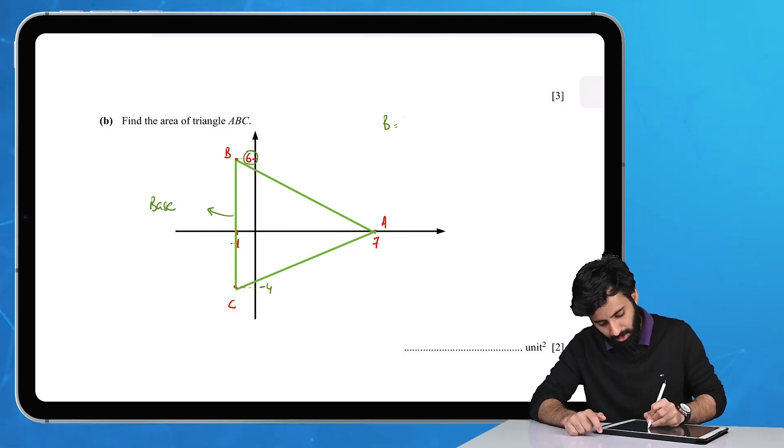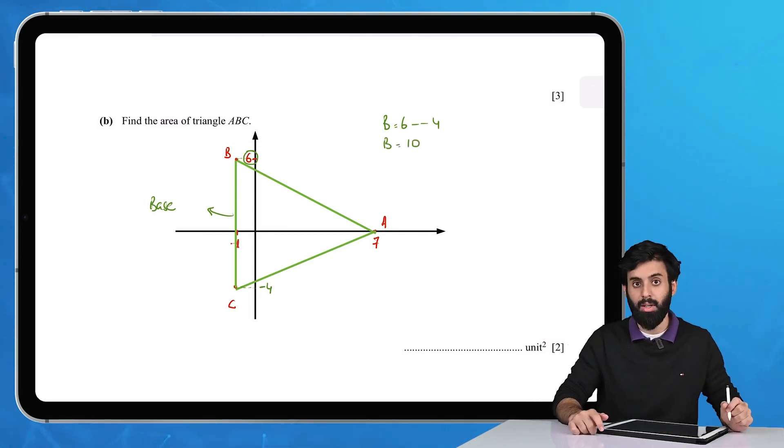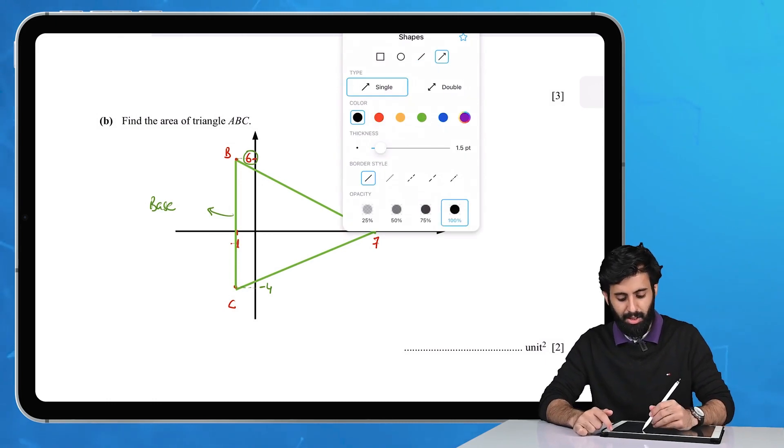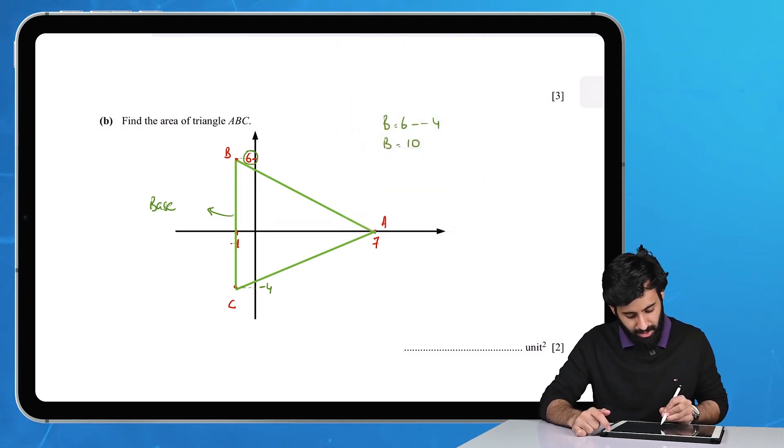So your base is going to be equal to 6 minus (-4), which means your base is 10 units.